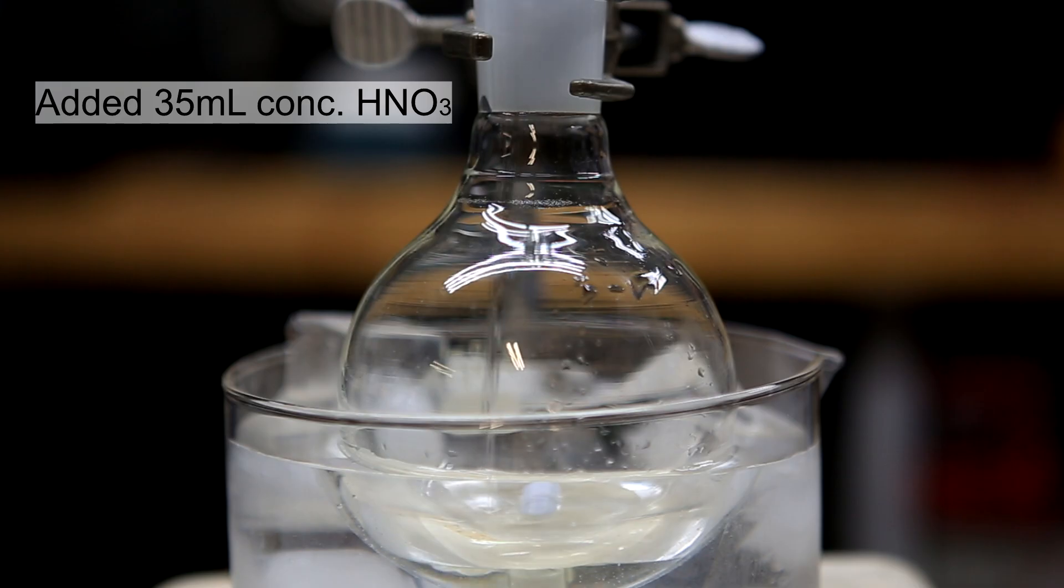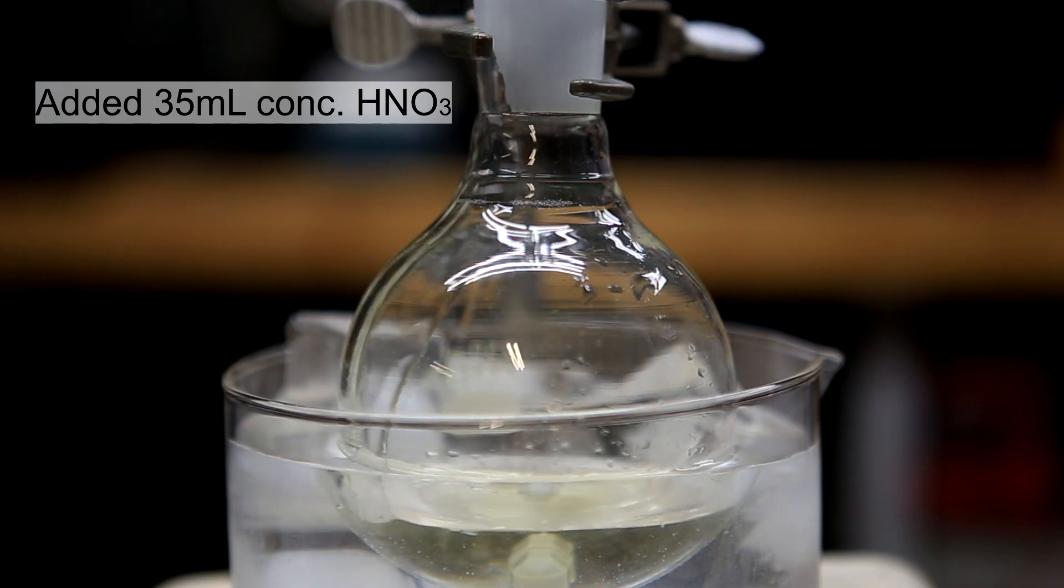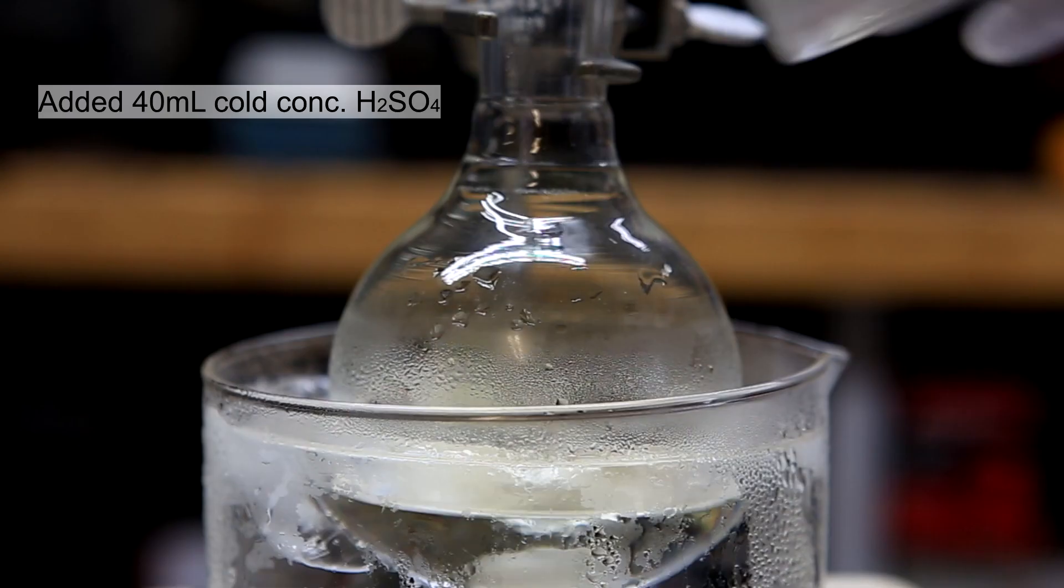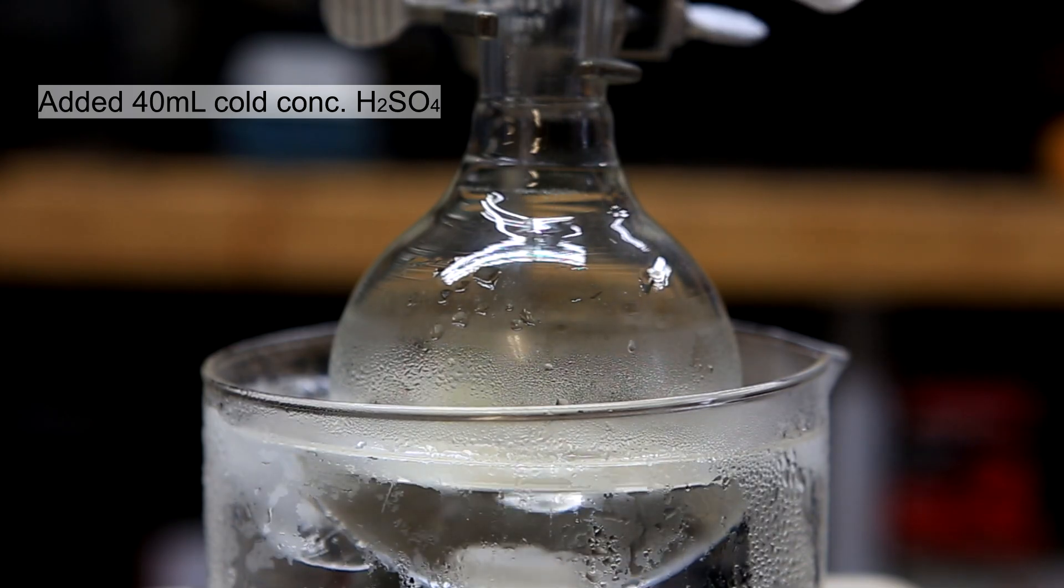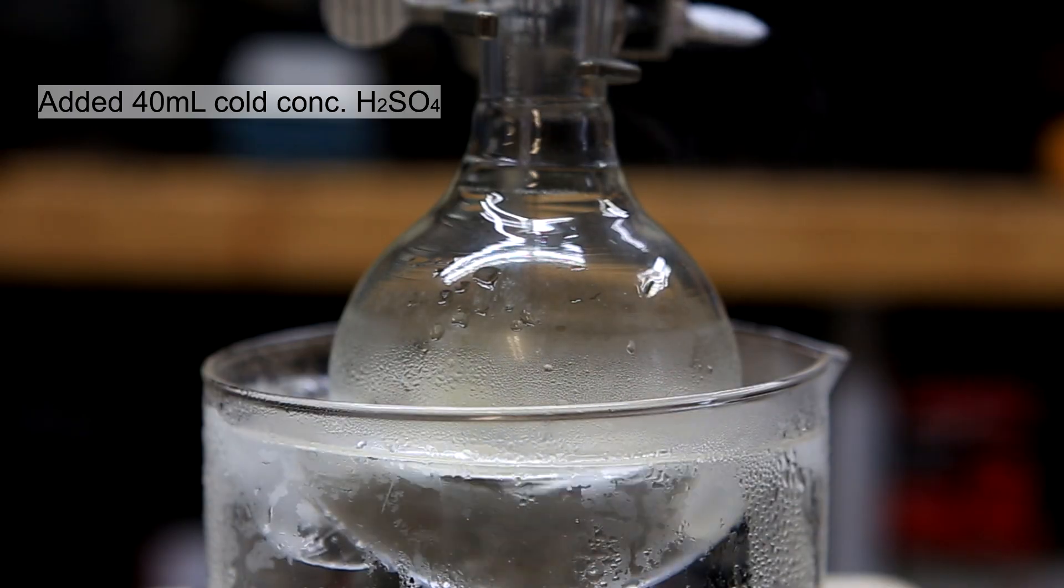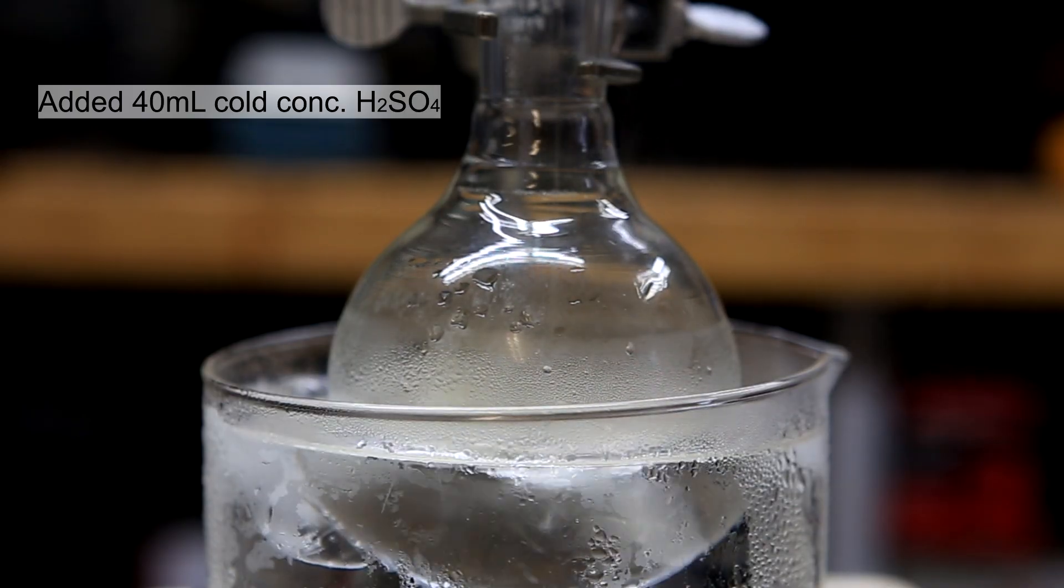35 milliliters of concentrated nitric acid was added to a round bottom flask. With stirring was added 40 milliliters of cold concentrated sulfuric acid. The sulfuric acid was cooled by putting it in a freezer for about 30 minutes.